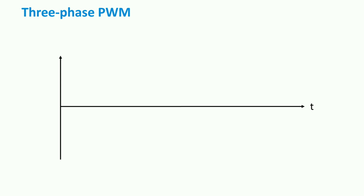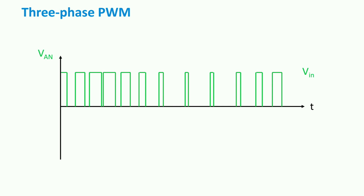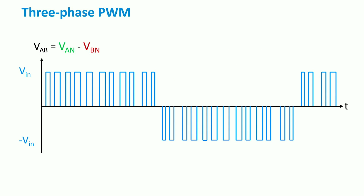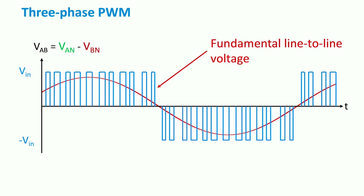Comparing each phase with a neutral point, a pulse train output similar to the bipolar single-phase PWM is found. For example, the voltage A with respect to a neutral point N varies between the input voltage value and zero. Comparing the second phase B to the reference signal, another output is found. Since the two sine waves have a 120 degrees difference, the two pulse trains are out-phased by a third of a period. The output voltage between legs A and B is the difference between VAN and VBN. What we obtain is the fundamental line-to-line voltage in one phase. Similarly, the line-to-line voltages between legs A and C and legs B and C can be found.